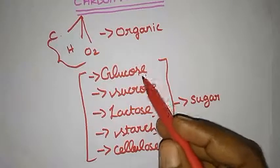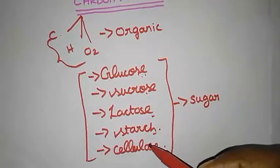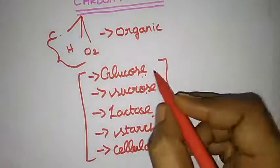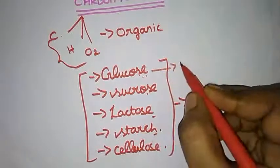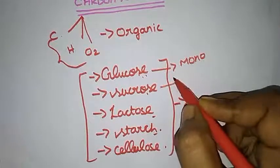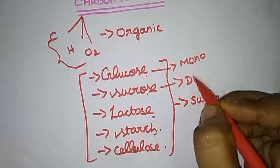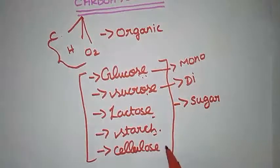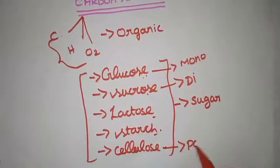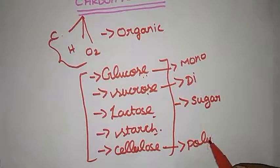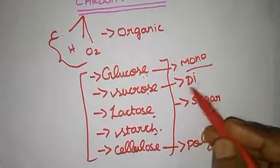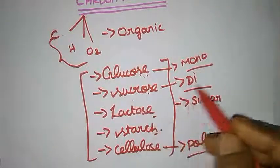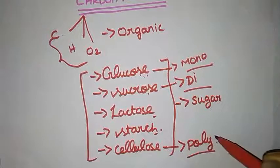Based on the number of sugar molecules present in the group, they are given names. Glucose contains monosaccharide — a single sugar molecule. Sucrose contains disaccharide — about two sugar molecules. And cellulose contains polysaccharide — a large number of sugar molecules. So based on sugar molecules, they are classified: glucose as monosaccharide, sucrose as disaccharide, and cellulose as polysaccharide.